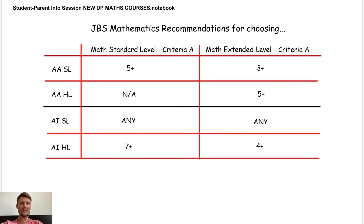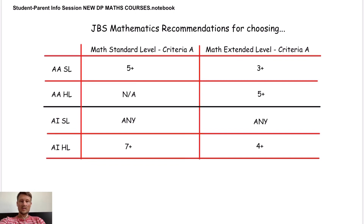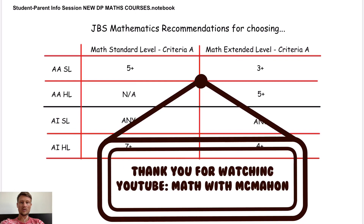For the Extended math class: everyone in that class will be able to do AA SL. To get into AA HL, only a handful would be recommended — an average of five or above in Criterion A, ideally six, seven, or eight. Anyone in that class can do AI SL. For AI HL, which is full calculator but still a challenging HL course, a Criterion A average of four to five is sufficient for Math Extended students. Thank you very much for listening — I'll be free to take all your questions next week in the Q&A.